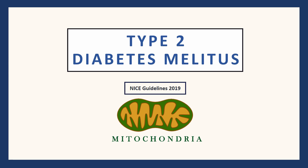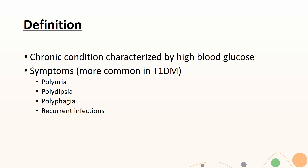This topic is on type 2 diabetes and it follows the NICE guidelines of 2019. Type 2 diabetes is a chronic condition categorized by high blood glucose. Symptoms of diabetes include polyuria, polydipsia, and polyphagia.